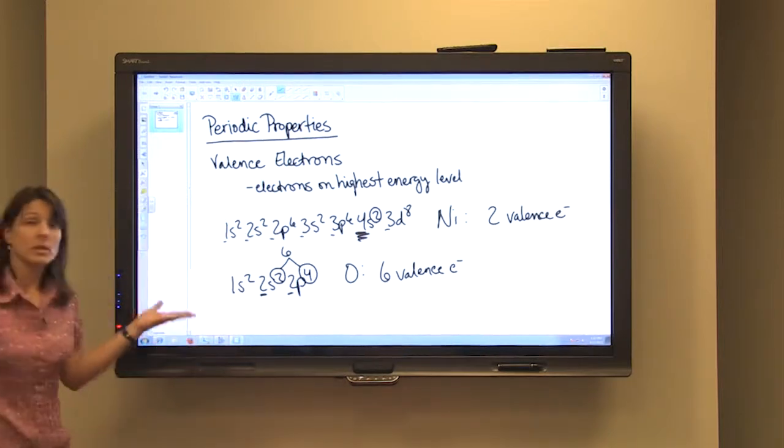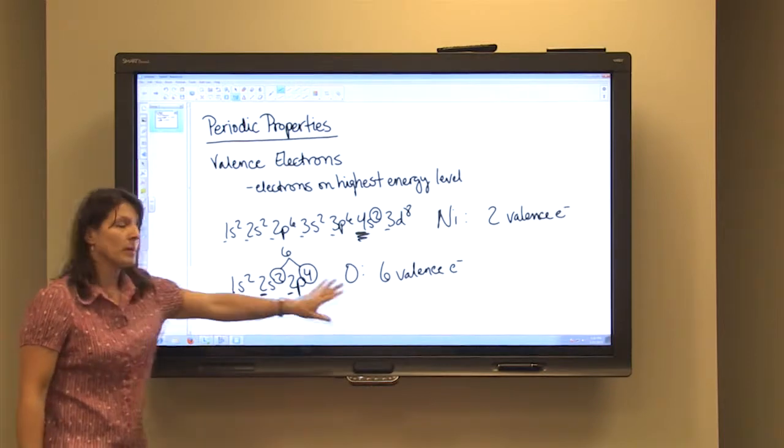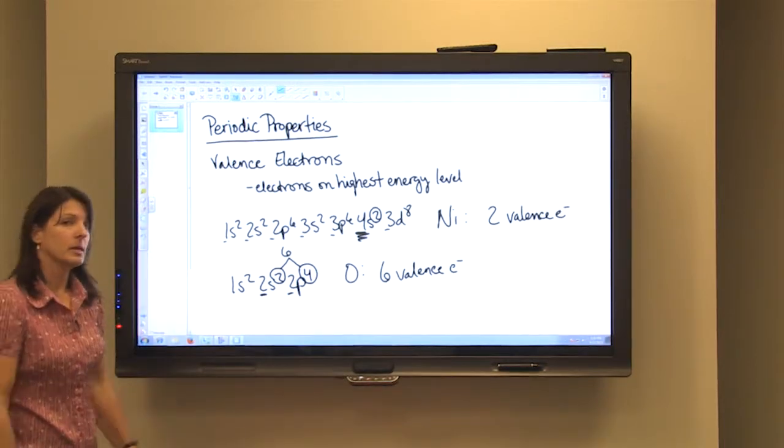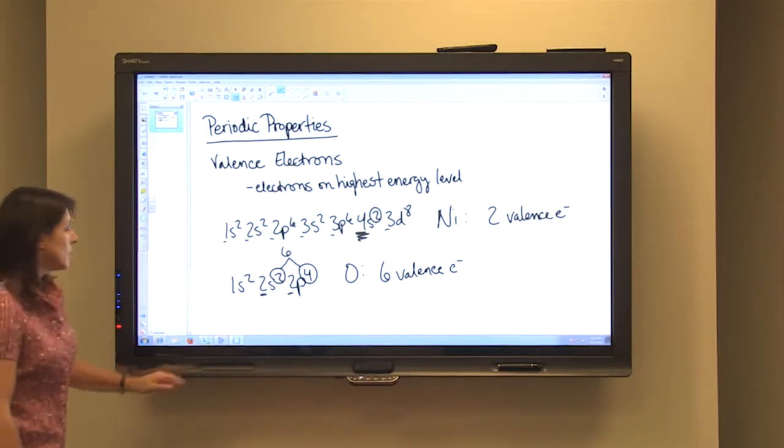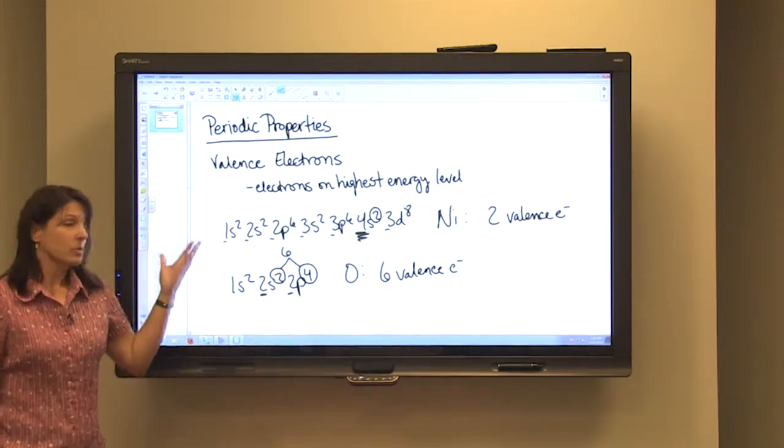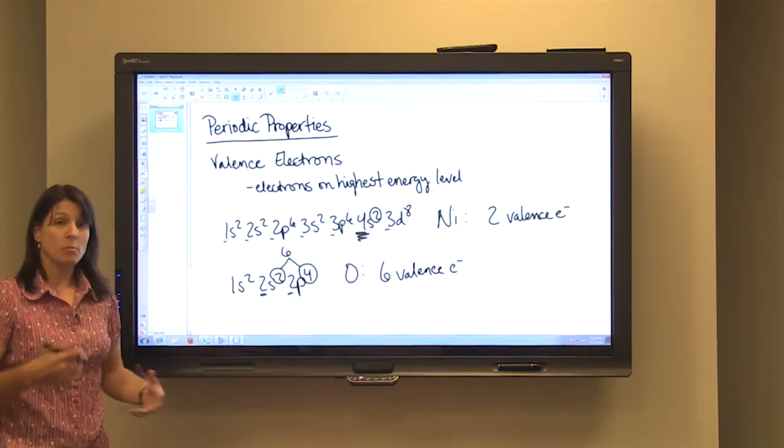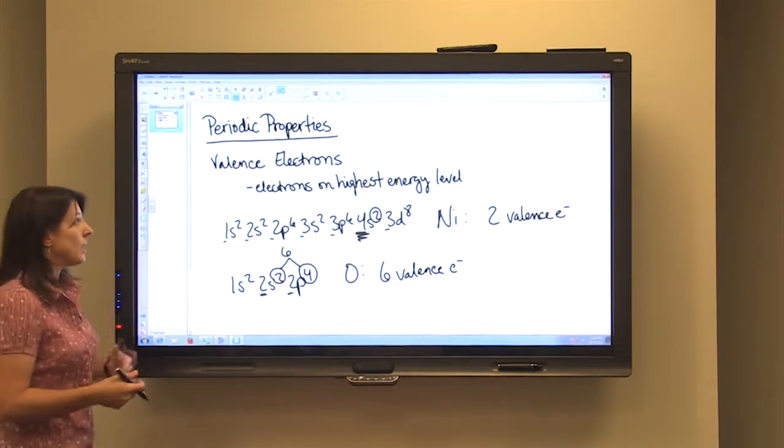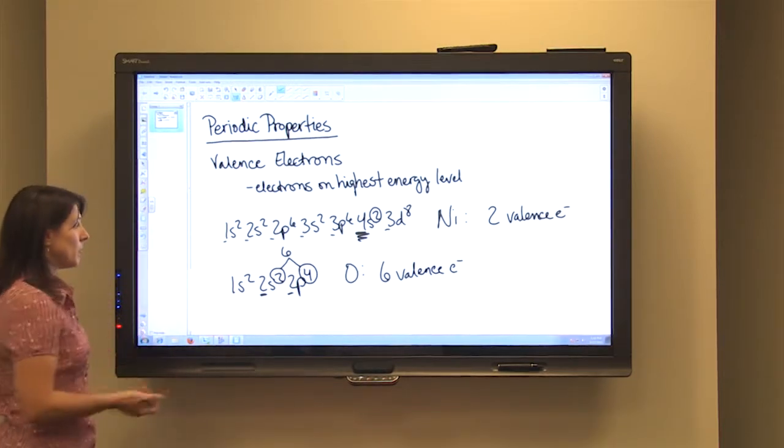So you can use electron configuration for either group A or group B elements. For group A elements, you can refer to the periodic table and just look at the group number. So the valence electrons are the electrons on the highest energy level. They're going to be the ones that are associated with bonding and the reactivity of the atom, and so those are the ones that we need to focus on when we start looking into bonding.